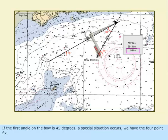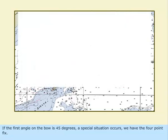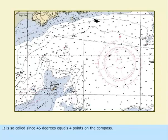If the first angle on the bow is 45 degrees, a special situation occurs. We have the four point fix. It is so called since 45 degrees equals four points on the compass.